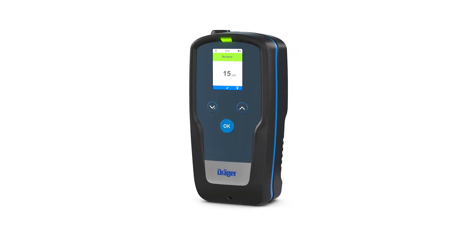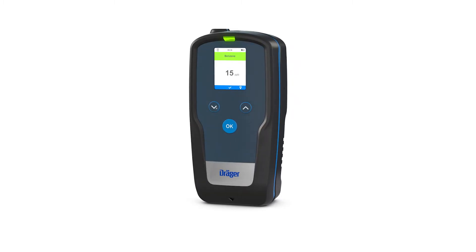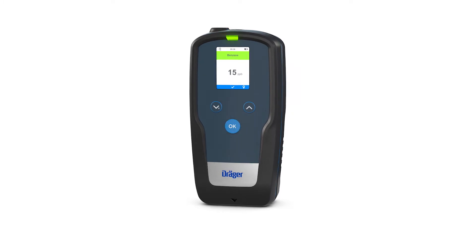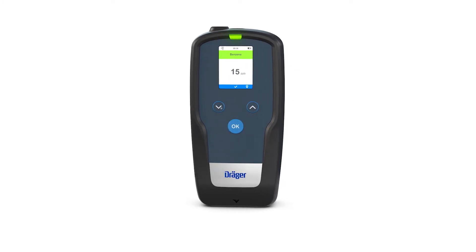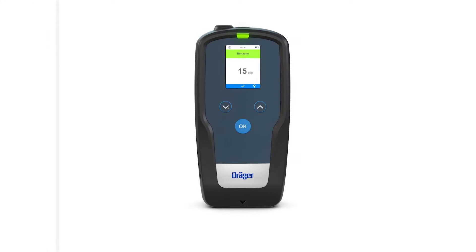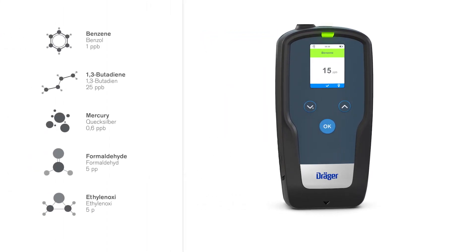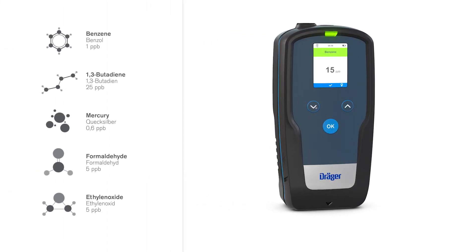The innovative Drager EXACT 7000 analysis system offers high precision gas detection in the low PPP range. This is particularly beneficial for testing for benzene and other carcinogenic toxins.